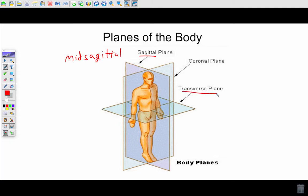The transverse plane divides the body into upper and lower pieces, upper and lower portions. And then the coronal plane, which is also called the frontal plane, divides the body into anterior, posterior portions. So front and back portions.